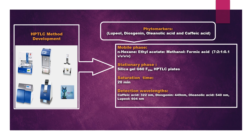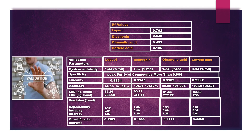Lupeol was detected at 604 nm. The Rf values of lupeol, diosgenin, oleanolic acid, and caffeic acid were found to be 0.702, 0.525, 0.453, and 0.186, respectively. The developed method was validated using various parameters, with linearity found using the correlation relationship coefficient.